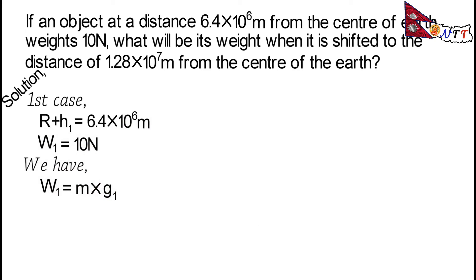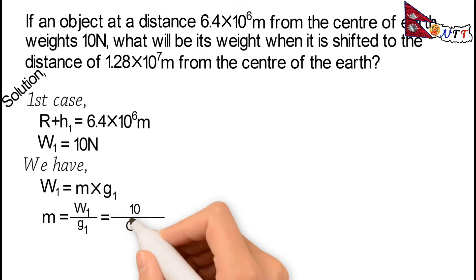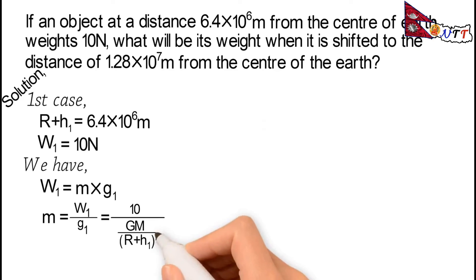W₁ is equal to 10 Newtons, and we have W₁ = m × g₁. In the second case, the distance is greater. g₁ is the acceleration due to gravity at height h₁, which is different from g at the surface. We can write m = W₁ / g₁, and g₁ = GM / (r + h₁)².